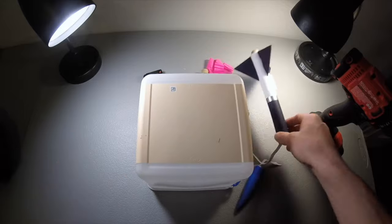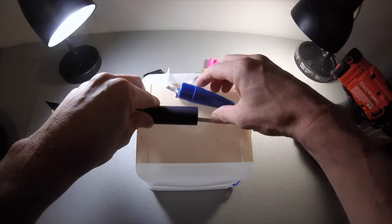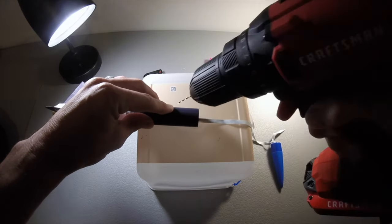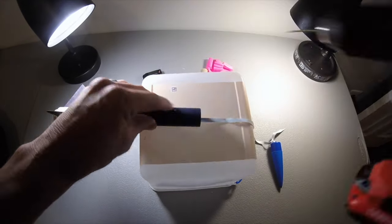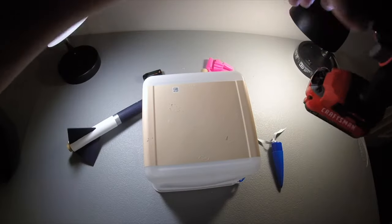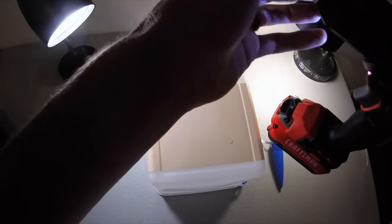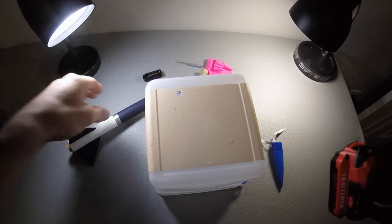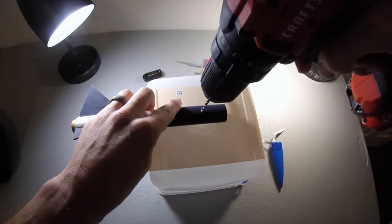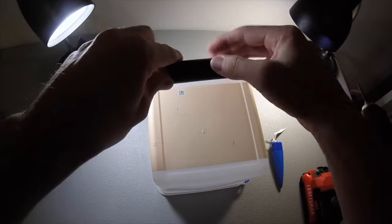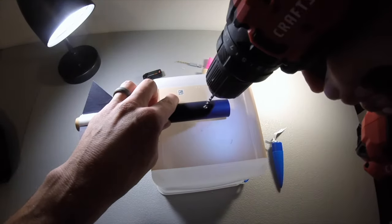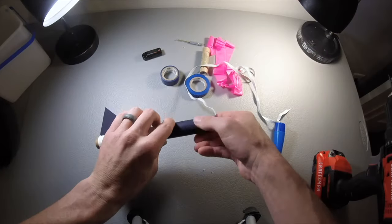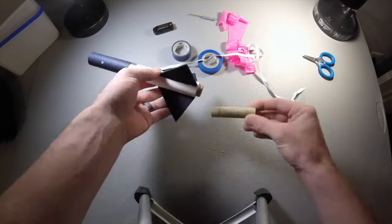So this rocket here is a Sunward kit. And it's pretty similar in size to the Quest Astra. And here I'm tying on the Jolly Logic Altimeter 3. And we're going to see it fly here in a second. I believe the motor was a B64. I think that's right. And we will be able to see the data.